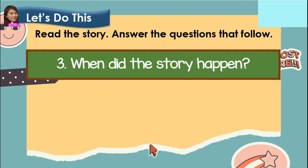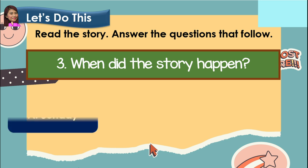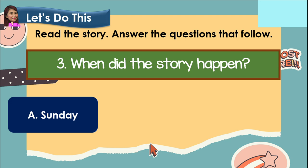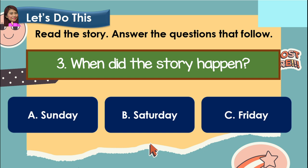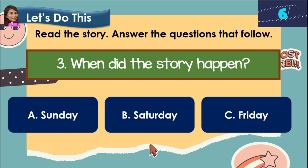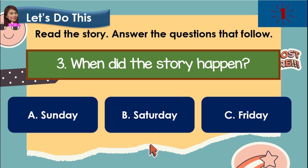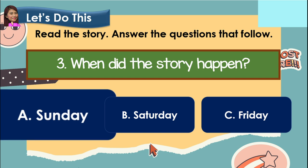Number three: when did the story happen? A. Sunday? B. Saturday? Or C. Friday? And the correct answer is letter A, Sunday.